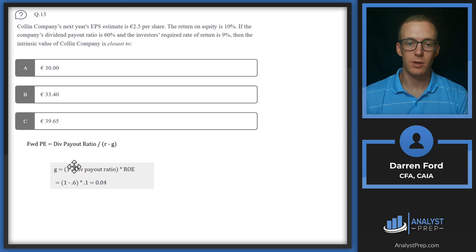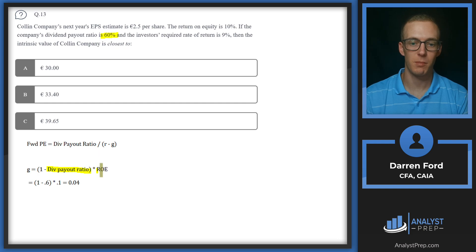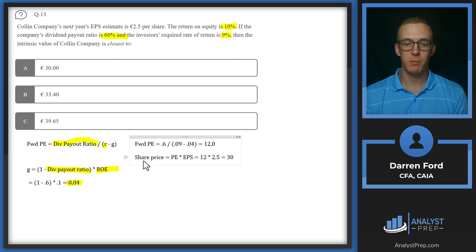To calculate the growth, we do have all the information we need. Growth is going to be 1 minus that dividend payout ratio of 60% or 0.6, multiplied by the ROE, which is 10%. So now we have G of 0.04, R will be 0.09, and dividend payout ratio 0.6. We can plug that in to get our forward PE multiple, which ends up at 12. Share price equals PE times EPS, which gives us 12 times that 2.5 EPS estimate, which is $30 or 30 pounds. So we will go with A, 30.